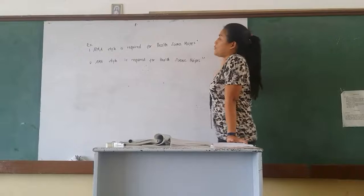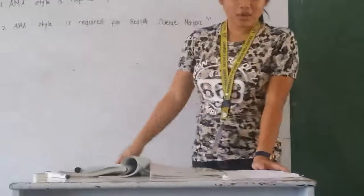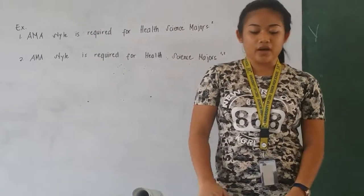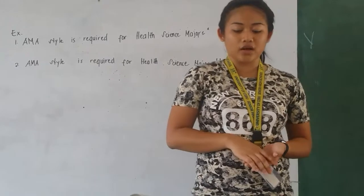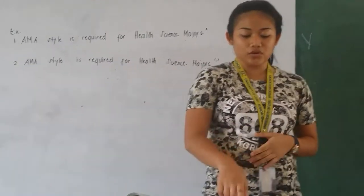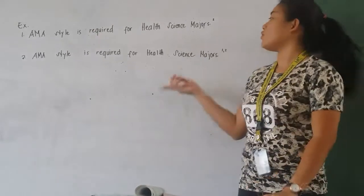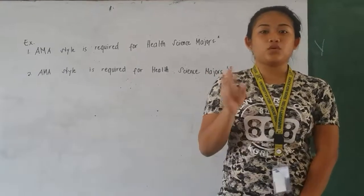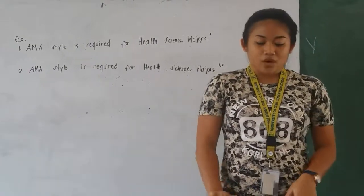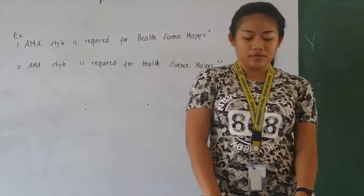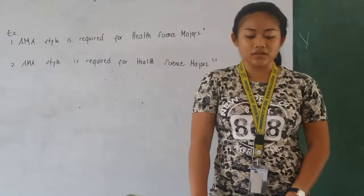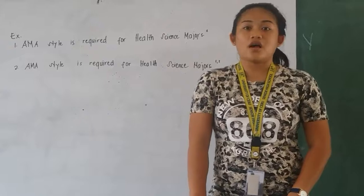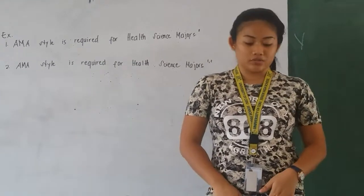This is the first example when there is only one author. When two articles of different authors are cited, you use a comma to separate the reference numbers. When you use a direct quote that is less than four lines, you must enclose it with quotation marks and put the reference number after the closing quotation mark.